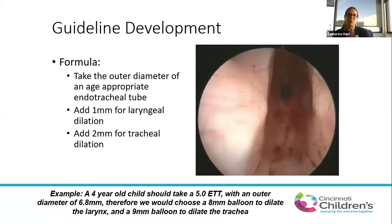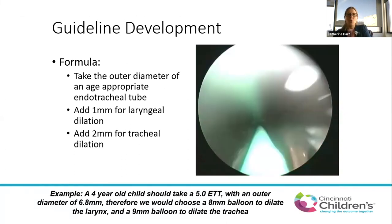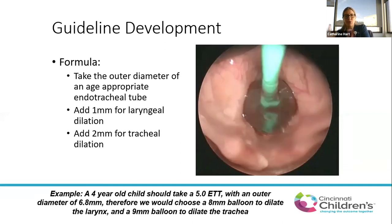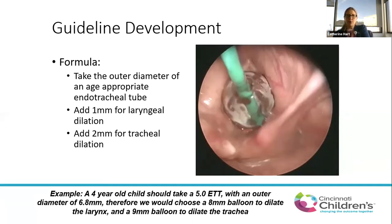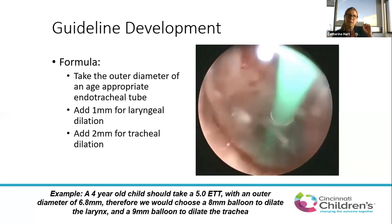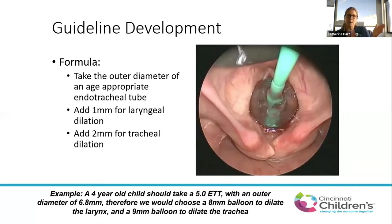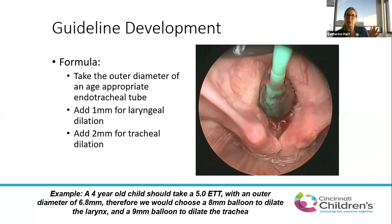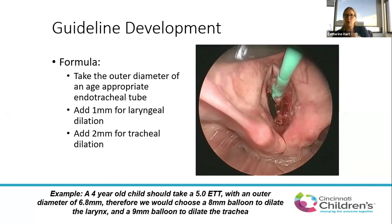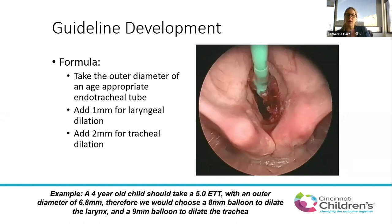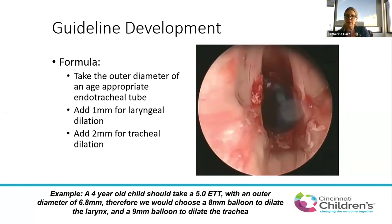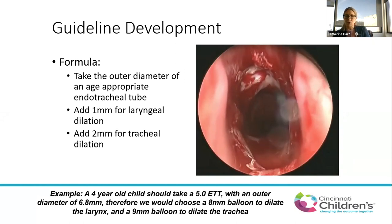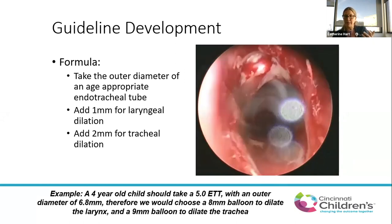To figure out what size balloon to use, you take the outer diameter of the age-appropriate endotracheal tube. If dilating at the level of the larynx, add one millimeter; if dilating in the subglottis or trachea, add two millimeters. For example, a four-year-old should take a 5.0 ET tube with an outer diameter of 6.8 mm, rounded to seven — so use an 8 mm balloon for the larynx, or 9 mm for the subglottis.